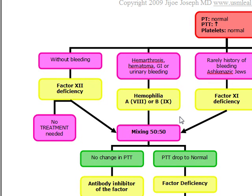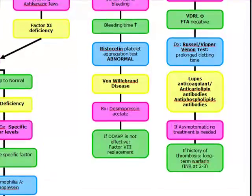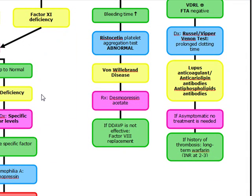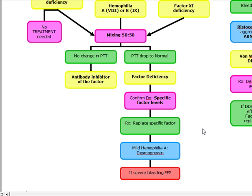You'll see a prolonged PTT with a normal PT. A factor deficiency is suspected when a mixing study is performed and the PTT drops to normal — this confirms a factor deficiency is present, but doesn't identify which factor. You must confirm with specific factor levels. The patient's blood is mixed with a normal control; if PTT normalizes, confirm with specific factor levels and replace the missing factor.